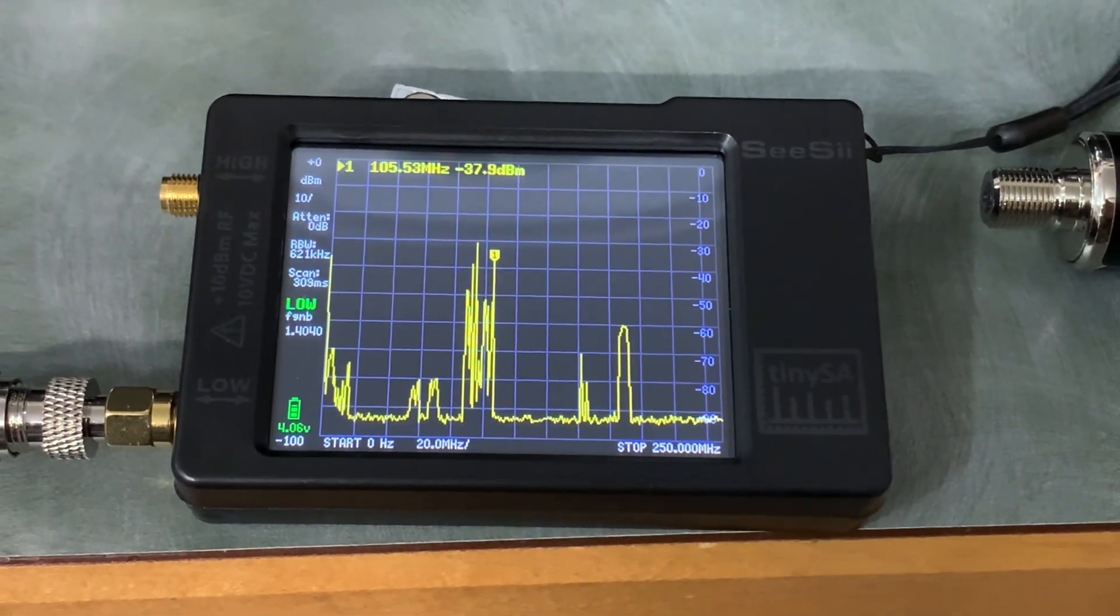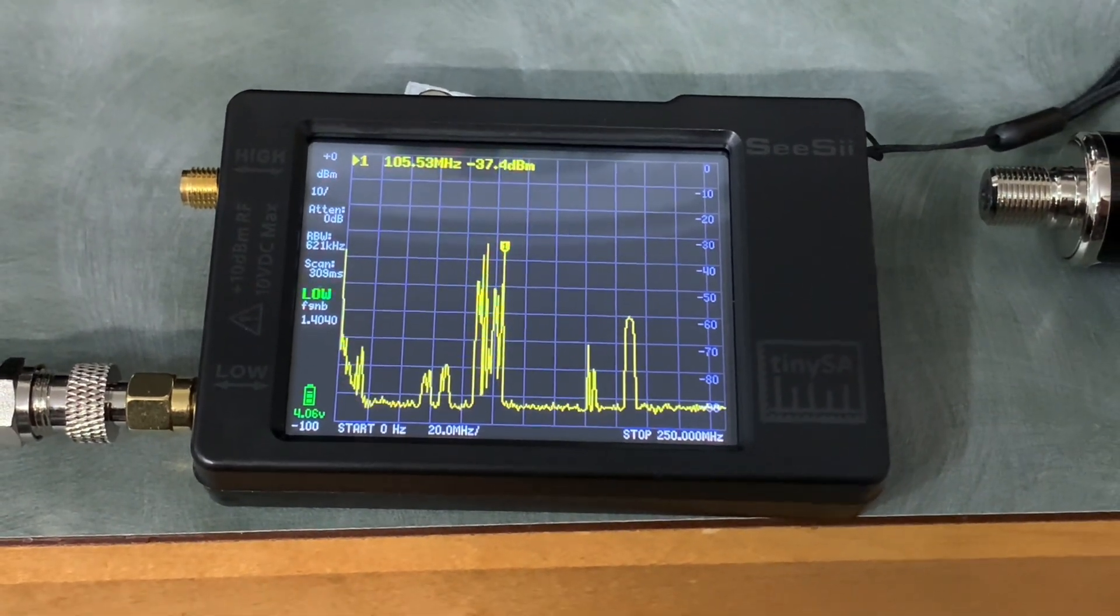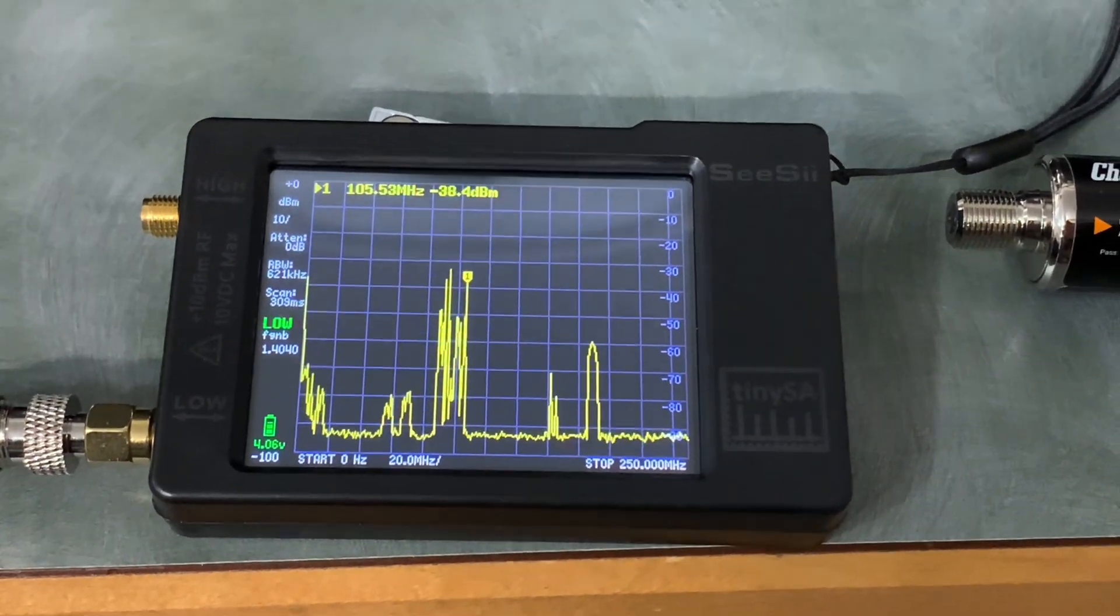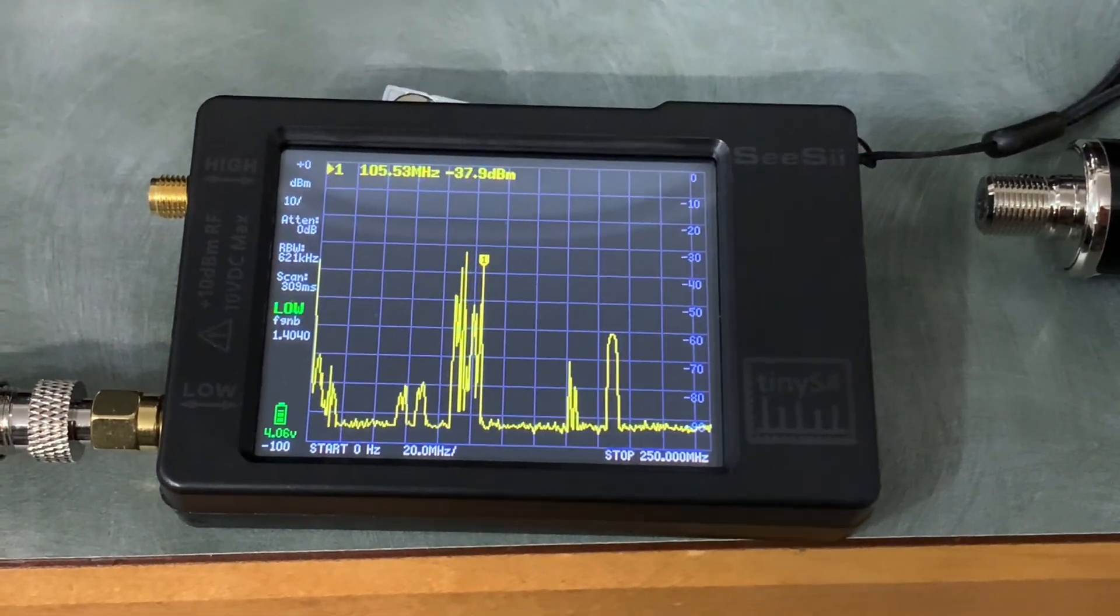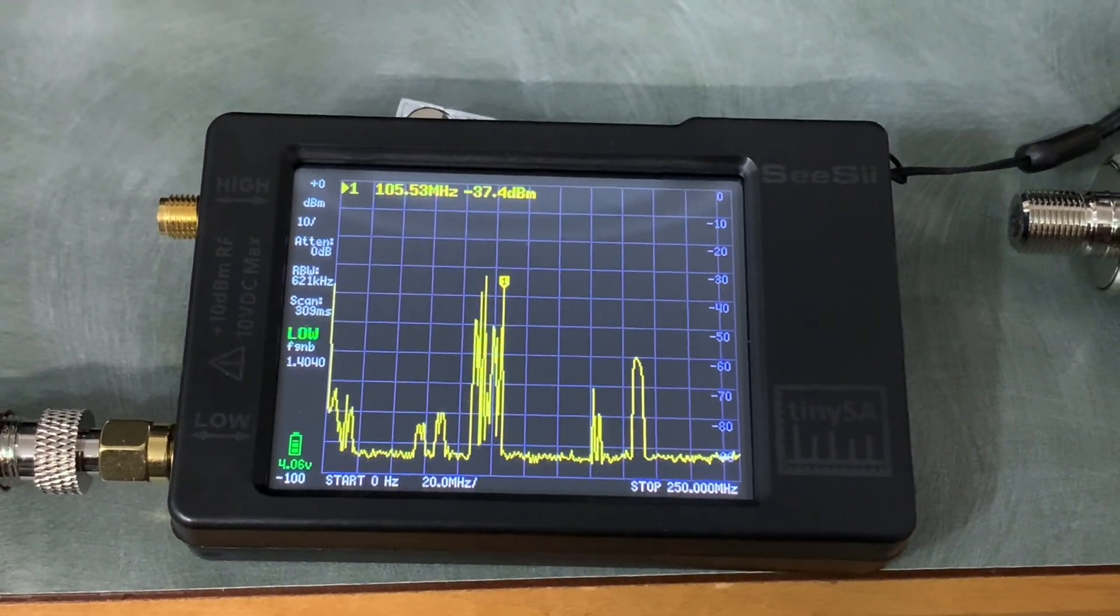FM radio stations are often much more powerful than local broadcast TV stations and they are definitely a possible source of noise or interference. Here we can actually see the difference that installing an inline filter can make for your TV antenna.